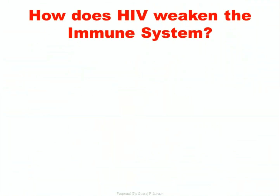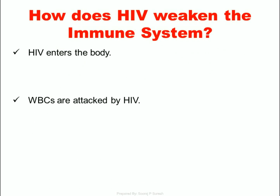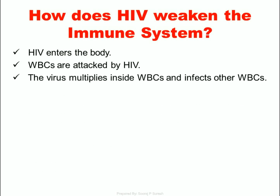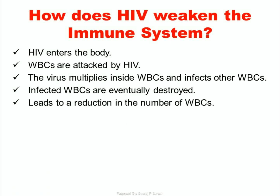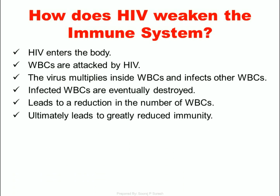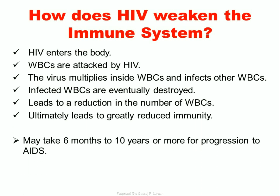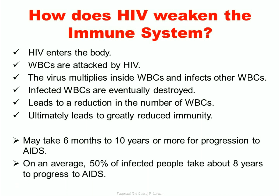How does HIV weaken the immune system? HIV enters the body and attacks white blood cells (WBCs). The virus multiplies inside WBCs and infects other WBCs. Infected WBCs are eventually destroyed, leading to a reduction in the number of WBCs and ultimately greatly reduced immunity. It may take 6 months to 10 years or more for progression to AIDS. On average, 50% of infected people take about 8 years to progress to AIDS.